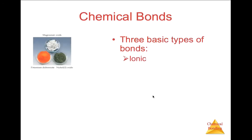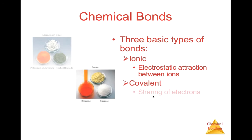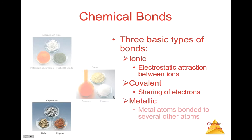There are three basic types of chemical bonds. Ionic, that includes electrostatic attraction between two charged ions, generally a metal and a non-metal, or a metal and a polyatomic ion, or two polyatomic ions. The second type are covalent bonds, where electrons are shared, sometimes shared unequally, generally between two non-metals. Examples include sulfur, bromine, and sucrose. And lastly, metallic bonds, when metals are bonded together or bonded to several other metal atoms. Examples are gold, copper, and magnesium.